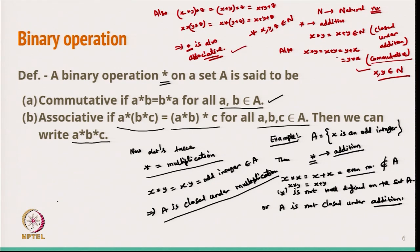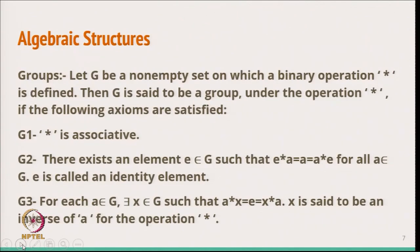So for natural numbers under addition, the operation is commutative as well as associative. We can also change the star to subtraction, and we will see that the set of natural numbers is not even closed under subtraction. This way we can define binary operations and check whether they are closed, commutative, or associative.